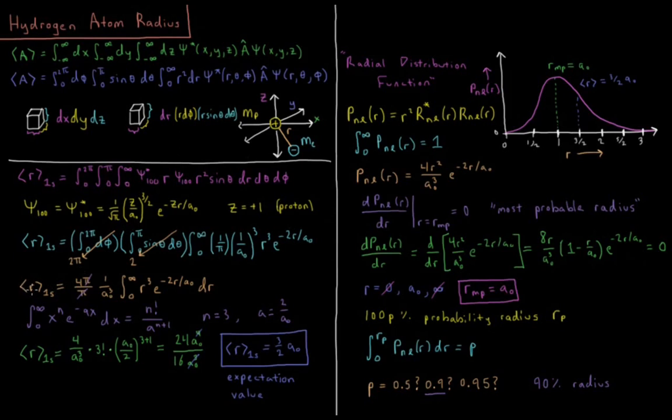So factoring those things together, we get our average value of r is equal to 4pi over pi, which cancels 1 over a naught cubed, we've factored out those constants, integral 0 to infinity, r cubed, e to the minus 2r over a naught, dr. At this point, we're looking for an integrals table, which has one of these integrals that we can look up, so we would do the integral from 0 to infinity, x to the n, e to the minus ax dx, which equals n factorial over a to the n plus 1.